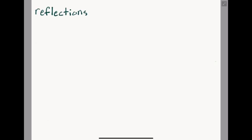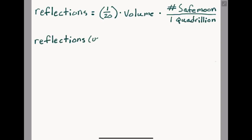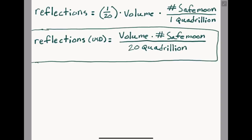After rewriting, we have a neat equation that tells us how much our daily reflections will be worth relative to the daily volume. Our equation is reflections equal volume multiplied by the number of Safemoon you own divided by 20 quadrillion. I go into greater depth on this topic in my first video and the link will be in the description.